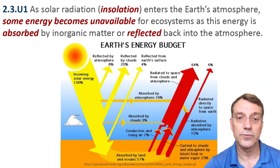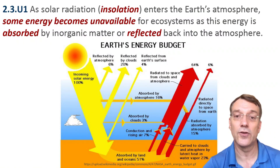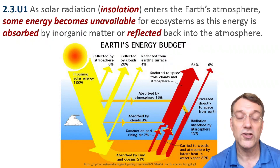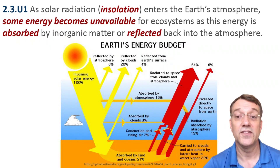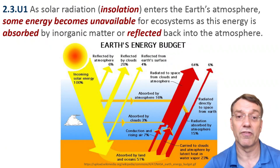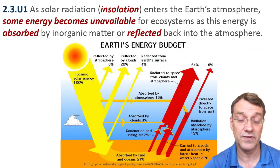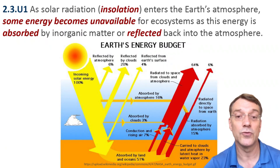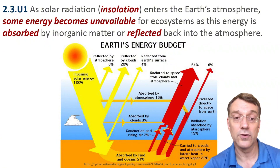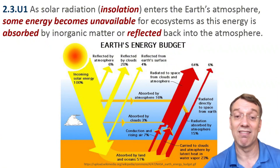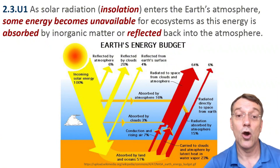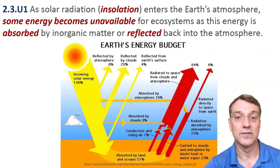As solar radiation or insolation enters Earth's atmosphere, much of it becomes unavailable for ecosystems. This energy budget shows how incoming solar energy is reflected by the atmosphere, clouds, and Earth's surface, while the remainder is absorbed by land, oceans, and the atmosphere.